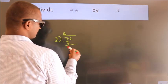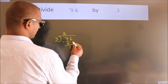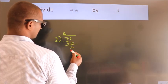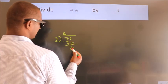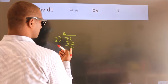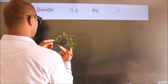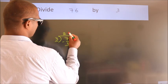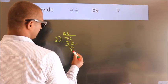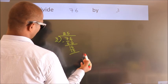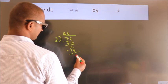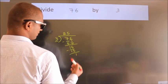After this, bring down the beside number. So 6 comes down, making 16. A number close to 16 in the 3 times table is 3 fives are 15. Now we subtract. We get 1.